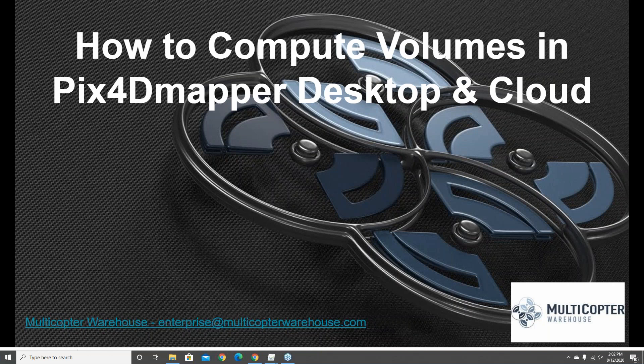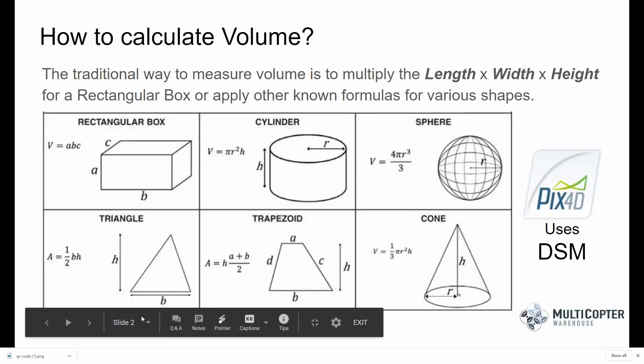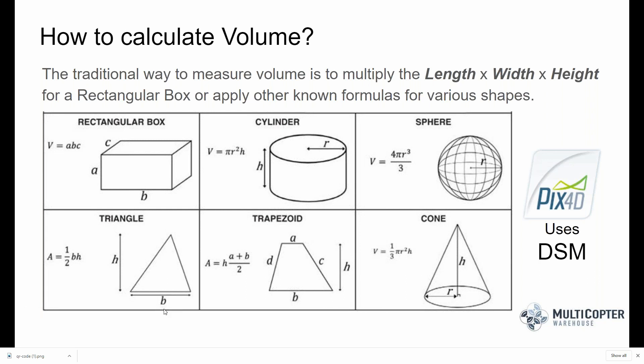How do you calculate volume? As we remember back to middle school or high school, the best way to define volume with a rectangle is to multiply length by width by height. There are a number of other mathematical formulas for different shapes to get accurate volume calculations, and PIX4D takes a very similar approach. PIX4D will leverage what we call the DSM or digital surface model generated during step 3 for volume calculations.